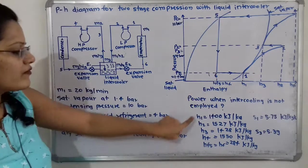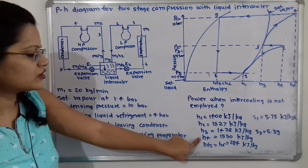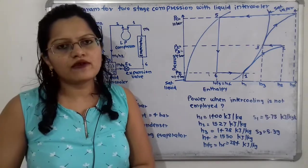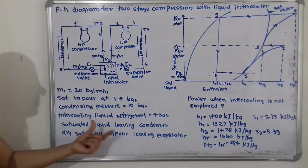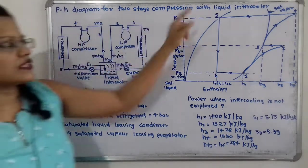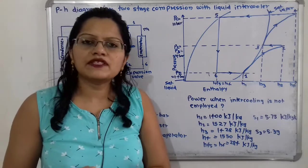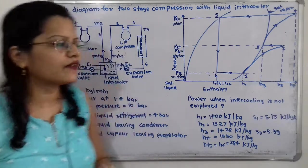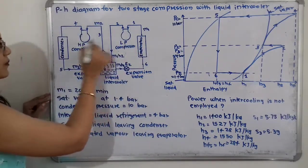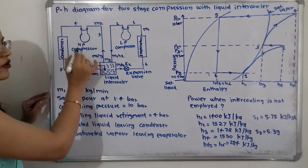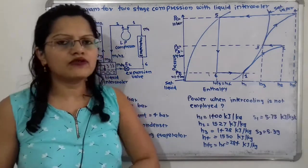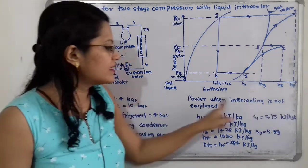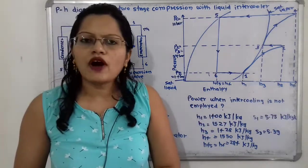From the p-H diagram, we have obtained: h1, h2, h3, h4, hf5, and h6. Now we must find the power needed for two-stage compression. Power equals work done divided by 60. The total work done W equals work at the low pressure compressor WL plus work at the high pressure compressor WH.